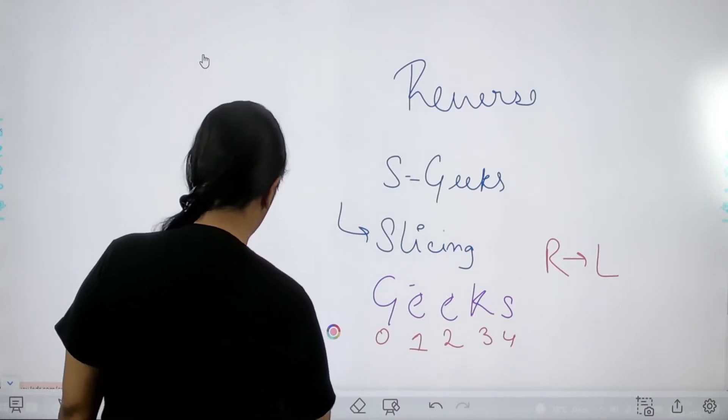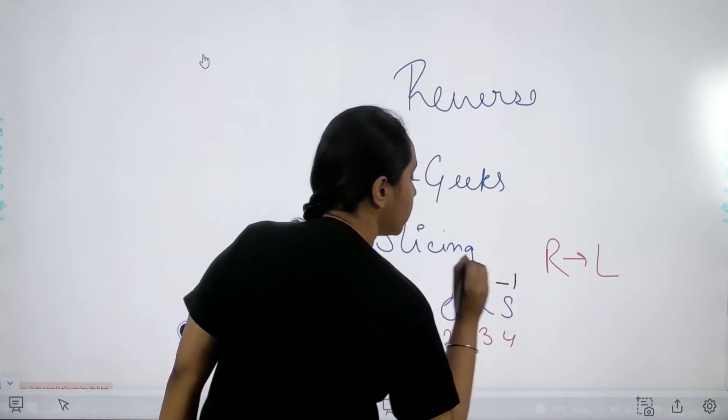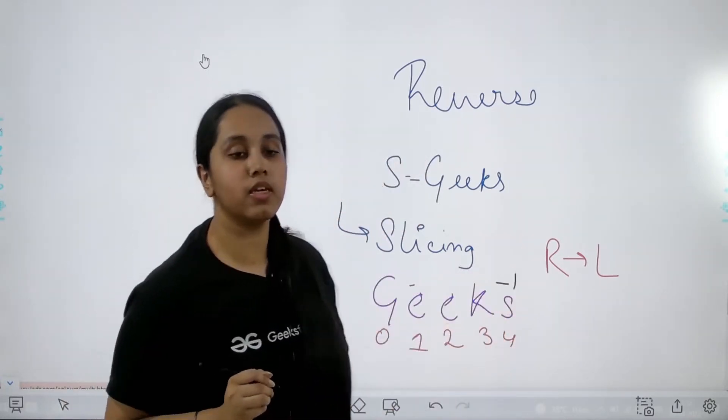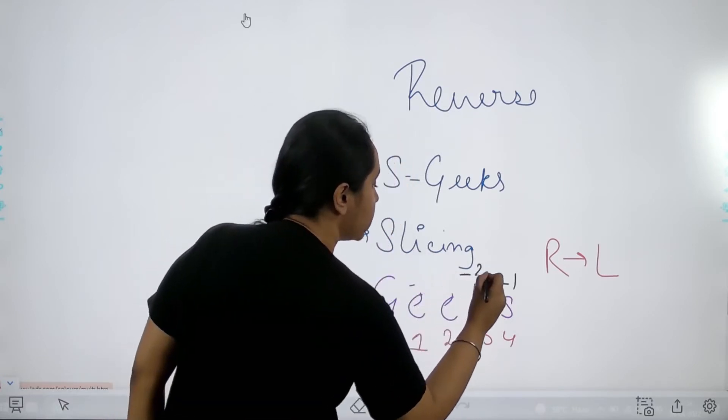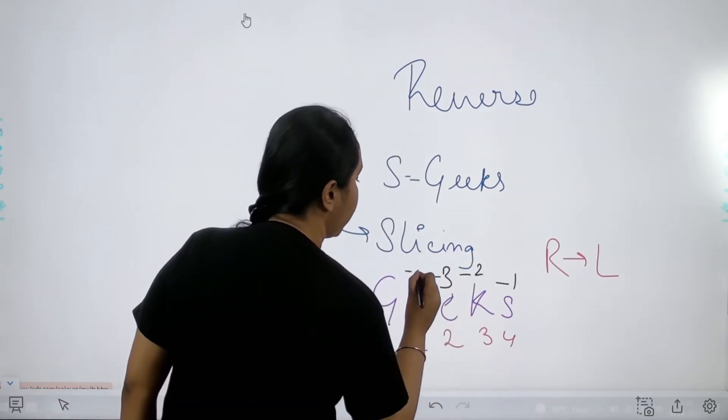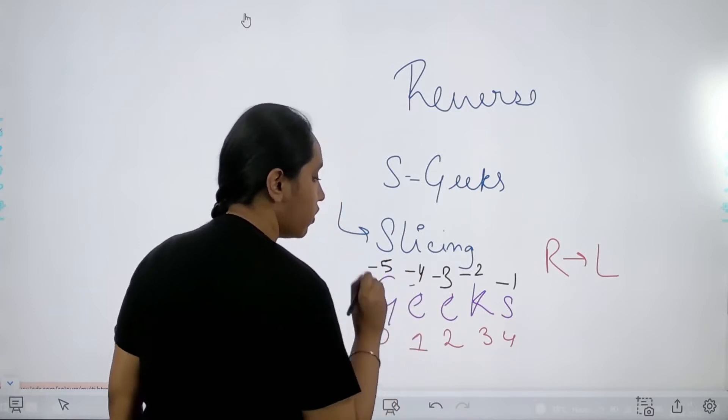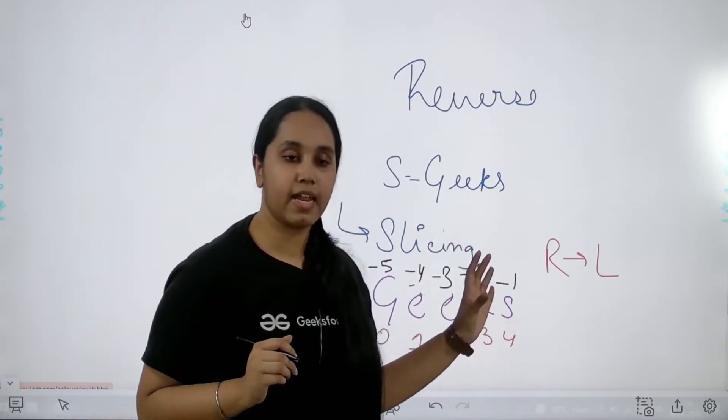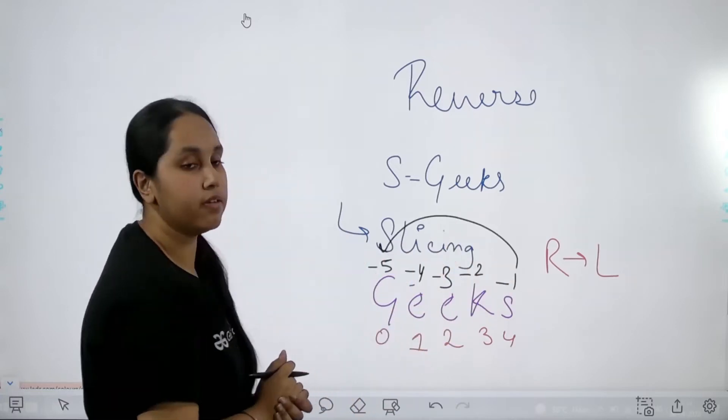So what are those? Index value for this would be minus 1 if I start from the right side. So minus 1, minus 2, minus 3, minus 4 and minus 5. So if I start from the right side the index values move forward in a negative way.